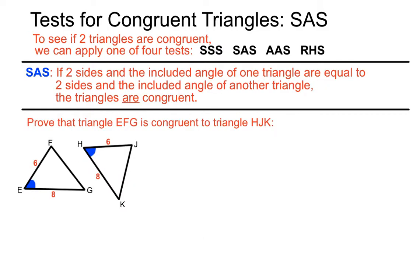Here's a typical question: prove that triangle EFG on the left is congruent to triangle HJK. Let's piece this together and see if we can make a side statement, an angle statement, and another side statement that adds up to enough information to pass this congruency test and say that these two triangles are congruent.